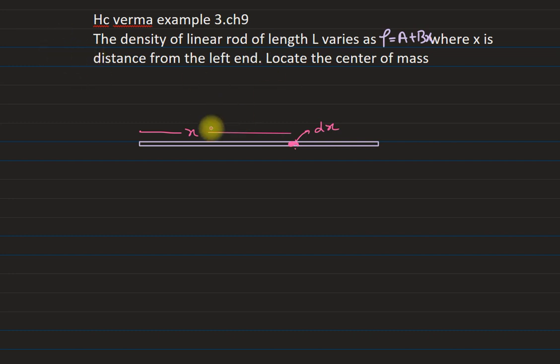So in this problem we have to calculate the center of mass of a linear rod, whose density is ρ = a + bx, where x is the distance from the left end. So here the density is varying with respect to the distance or the position. So we have to locate the center of mass.